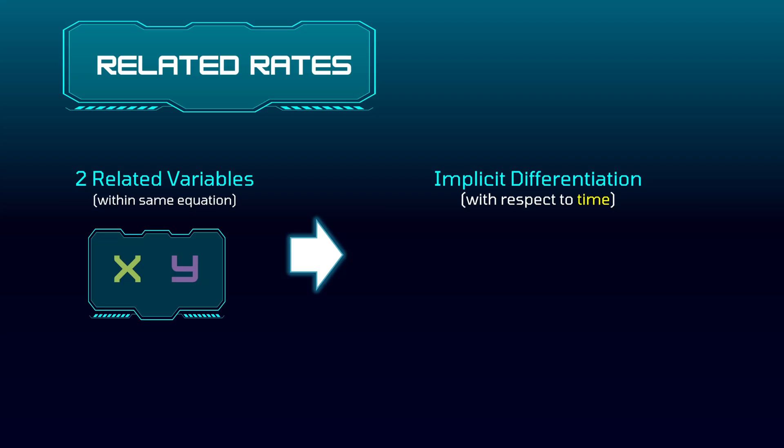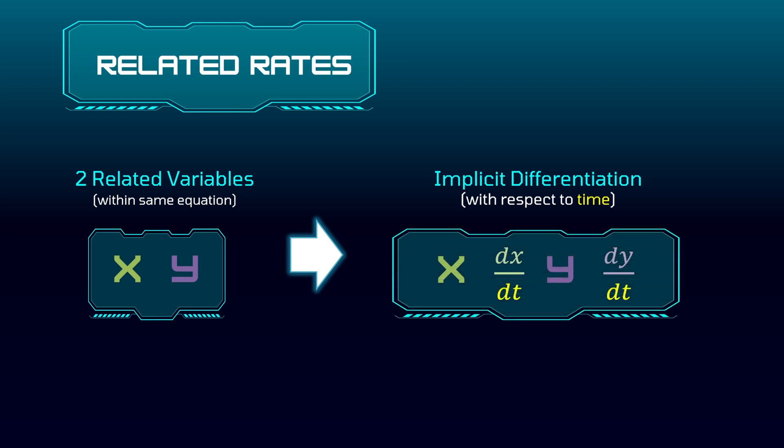How do you do that, or what does that even mean? Don't worry — I'm going to go over all the basic fundamentals of implicit differentiation in just a second. Once we perform implicit differentiation, both variables are still there, but we also unlock two more things. We unlock dx/dt, which is the rate of change of our x variable, and dy/dt, which is the rate of change of our y variable.